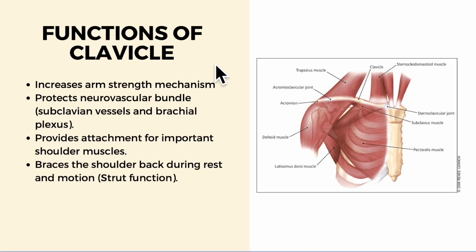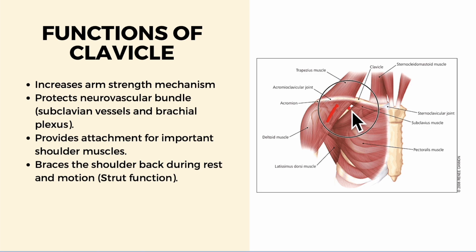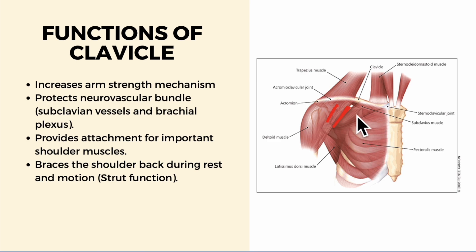Looking at some functions of the clavicle: it increases the arm strength mechanism; it protects the neurovascular bundle — that is the subclavian vessels and the brachial plexus that runs beneath it; and it provides attachment for important shoulder muscles like the deltoid and the pectoralis major. It also braces the shoulder back during rest and during motion.